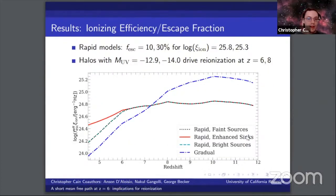We also looked at the ionizing efficiency and escape fractions in our models. For our rapid models and reasonable values of the ionizing efficiency, we found that our rapid models are consistent with escape fractions of 10 to 30 percent at redshifts greater than 6. This is consistent with previous work that has found that higher escape fractions are needed at these redshifts than what we see at lower redshifts in order to supply the photons needed to complete reionization.